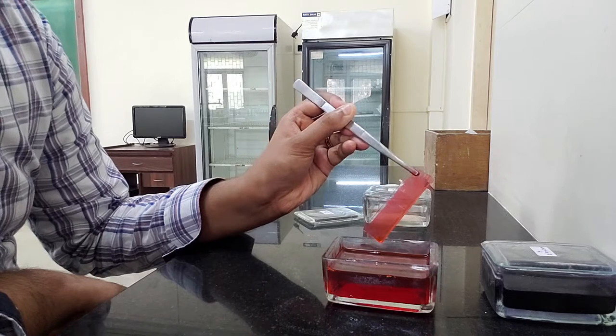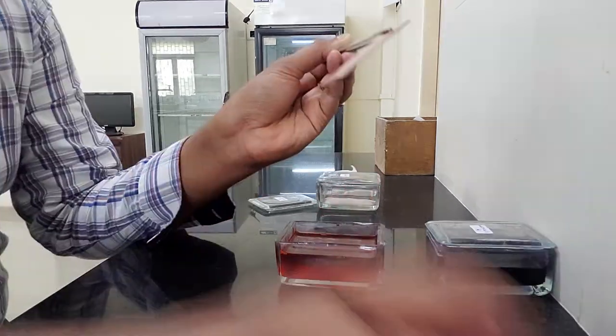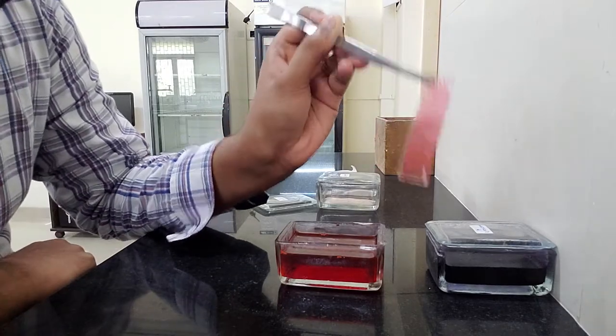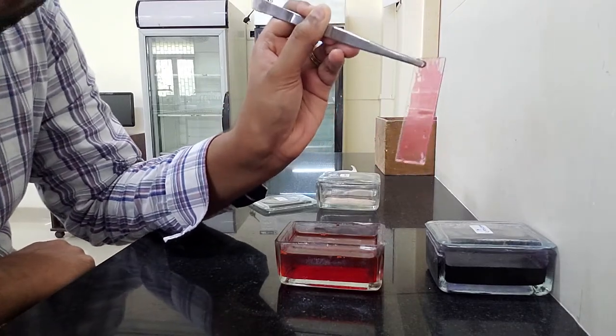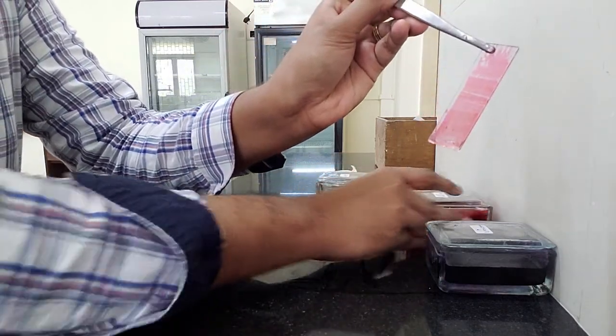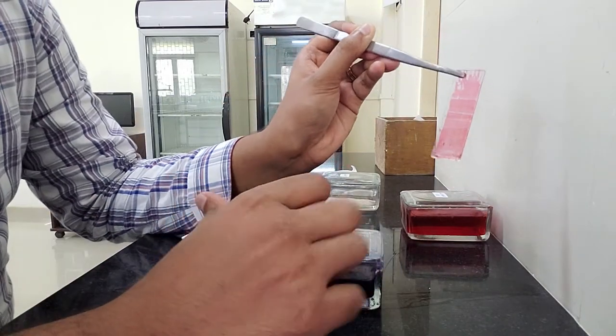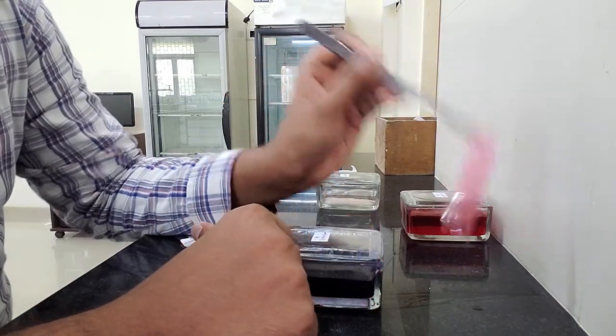Then you have to gently wash it under the stream of water. After washing under tap water, this is how it's going to look like. I'm done with Field stain B, so I'm going to keep it aside and now I will take up Field stain A.